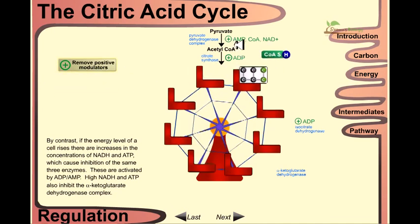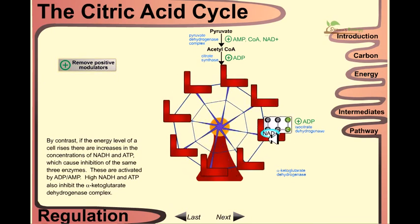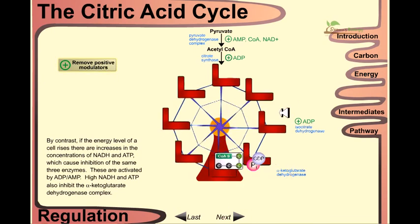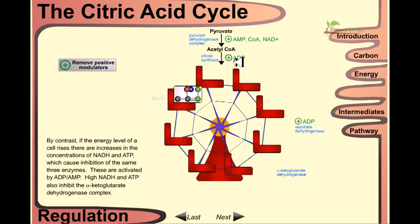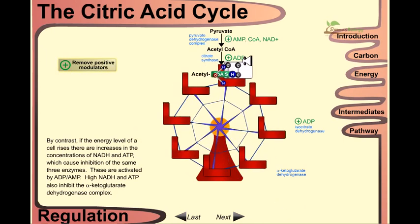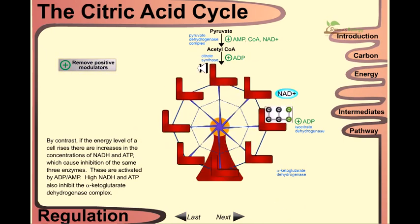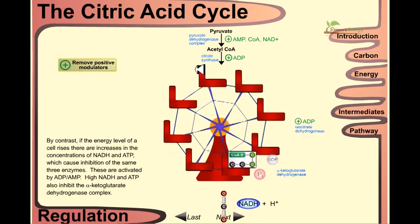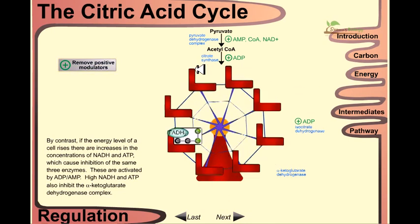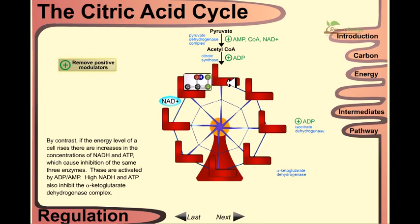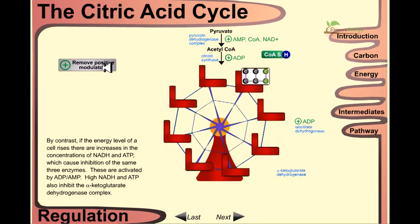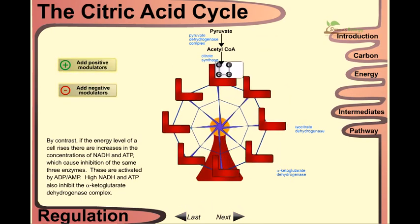If we add the positive modulators, it will move on. Again, the positive modulators act on three steps, negative modulators are acting on four different steps. Positive modulators are AMP, ADP, or energy-less molecules. Negative modulators are energy-heavy molecules like NADH, ATP, succinyl CoA, acetyl CoA, and all these things.